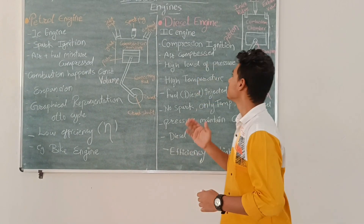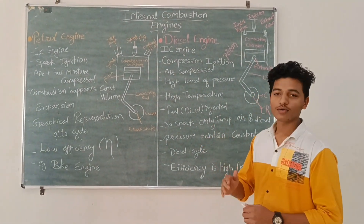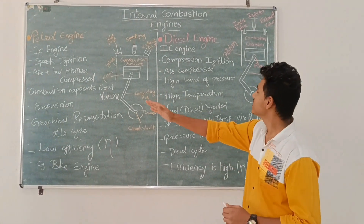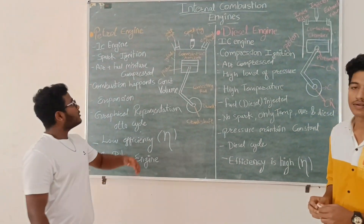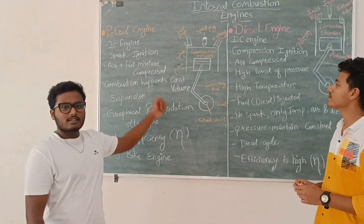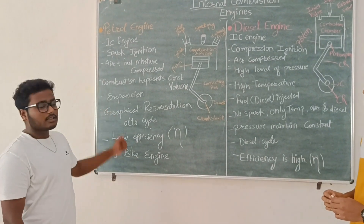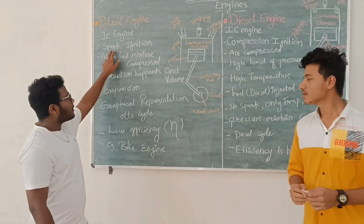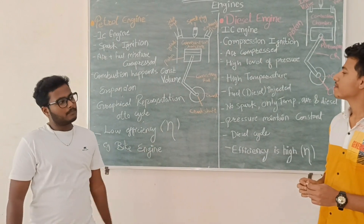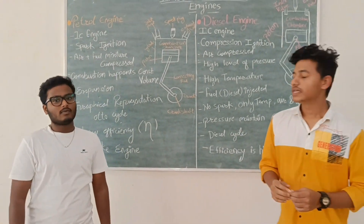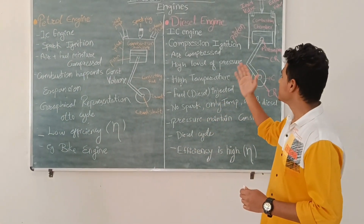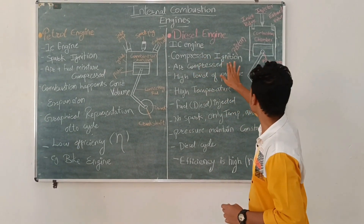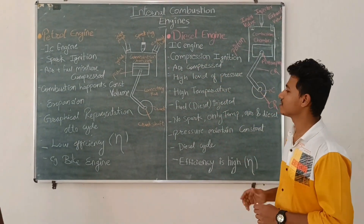In internal combustion engines there are two types: petrol engines and diesel engines. The petrol engine is an IC engine which works on the principle of spark ignition. The diesel engine is an IC engine which works on the principle of compression ignition.